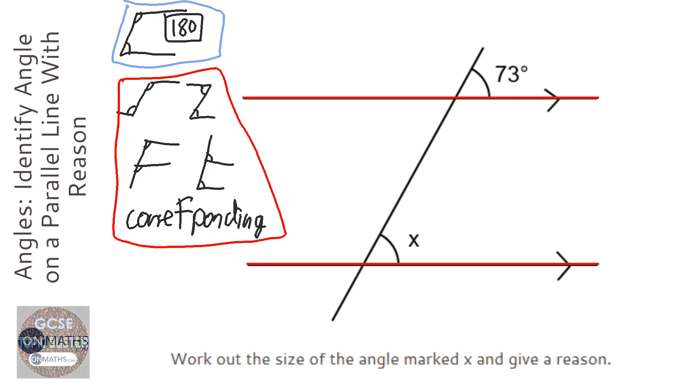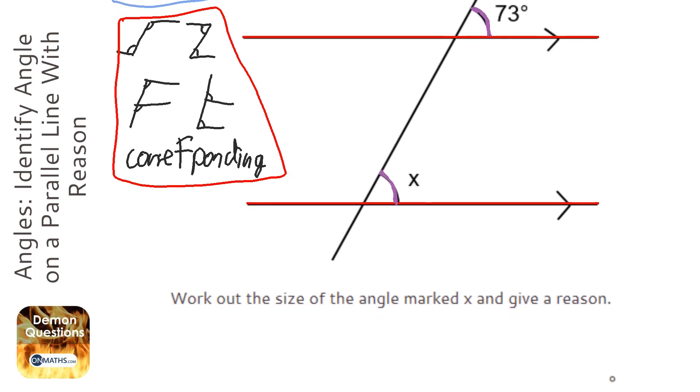A simple check is, have a look at this angle here—it's acute and it's 73. If this one is also acute, then chances are it's going to be the same. If you've got one acute and one obtuse, then chances are you take it away from 180. There's a bit of a check you can do.